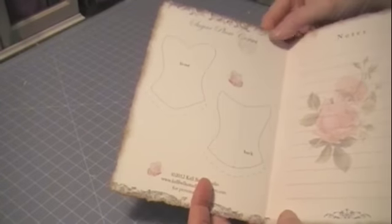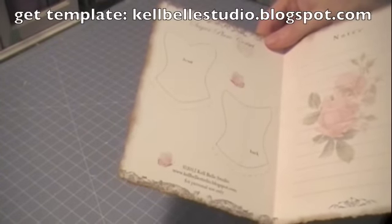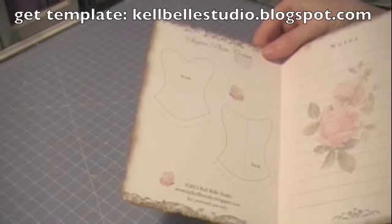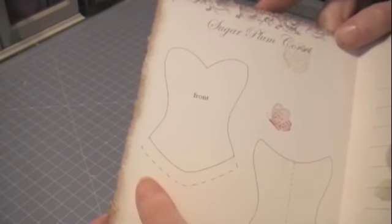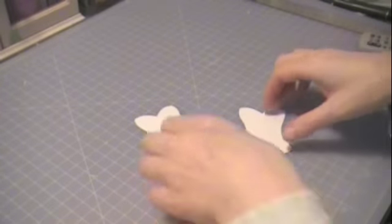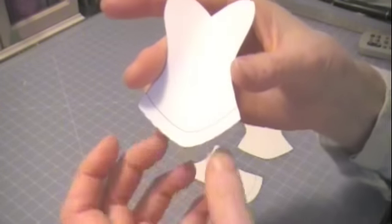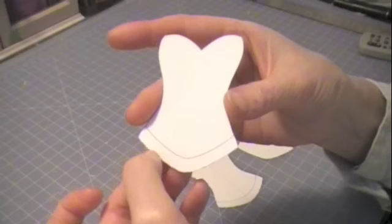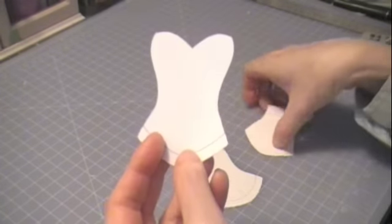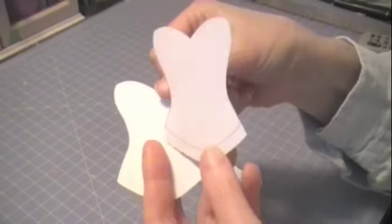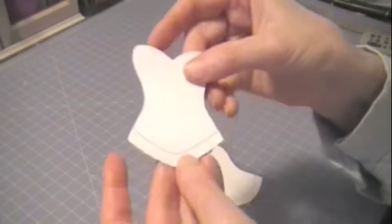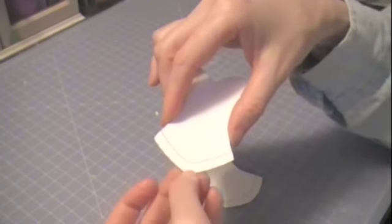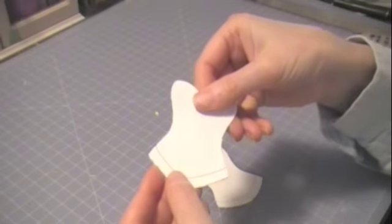This is what your Sugar Plum Corset Template looks like for December. As usual, I will leave a link in this video, as well as in the description, so that you can go grab this. You'll notice that there is a dotted line at the bottom of this, and that is to extend the corset out. I've got a piece cut out, so when I cut out my piece, I went right down to that dotted line. So what you want to do is come all the way down to that dotted line and cut out your pieces.